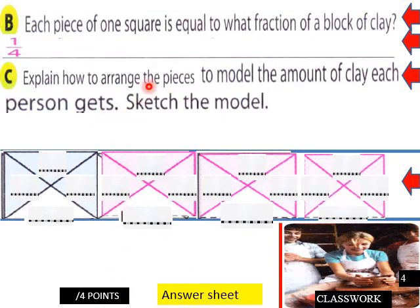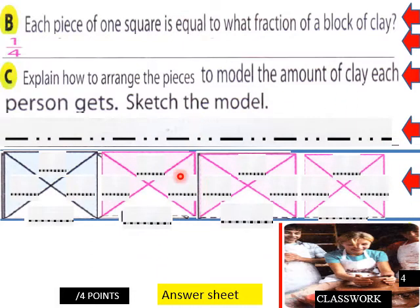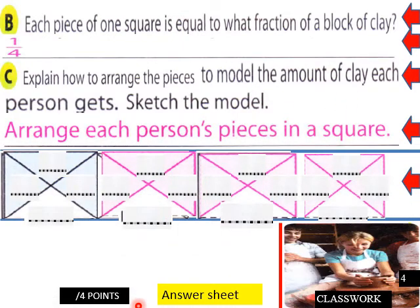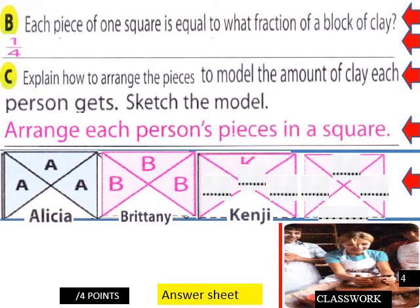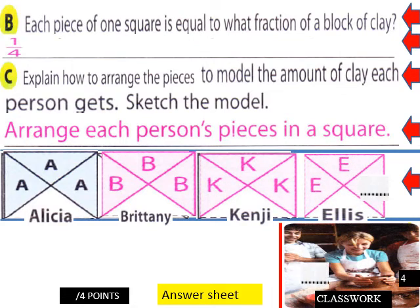Explain how to arrange the pieces to model the amount of clay each person gets, sketch the model. So arrange each person's pieces in a square. So here's Alicia's square. A-A-A-A. So she gets three-fourths of a block. Brittany gets three-fourths of a block. Kenji gets three-fourths of a block. Ellis gets three-fourths of a block.